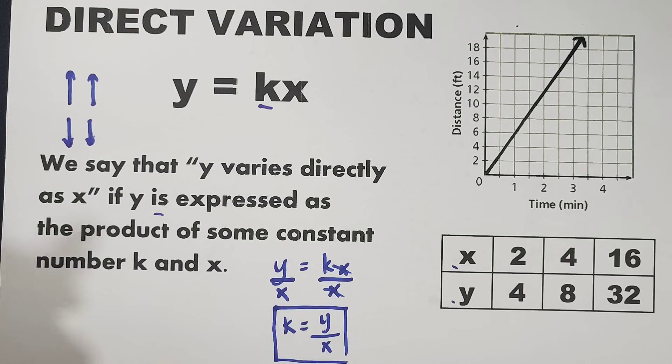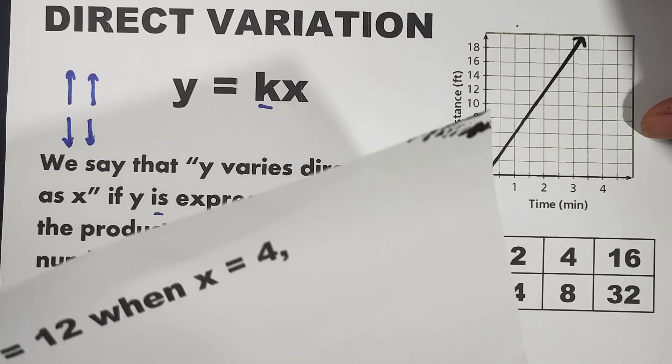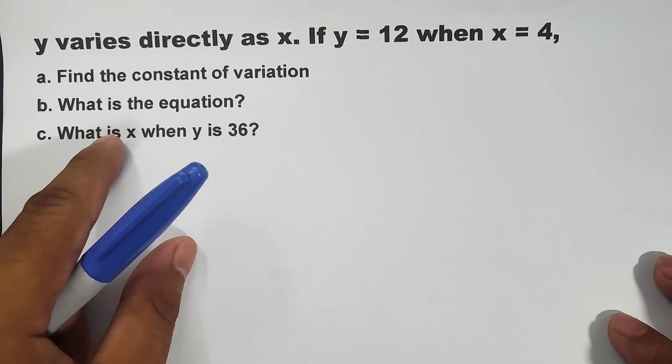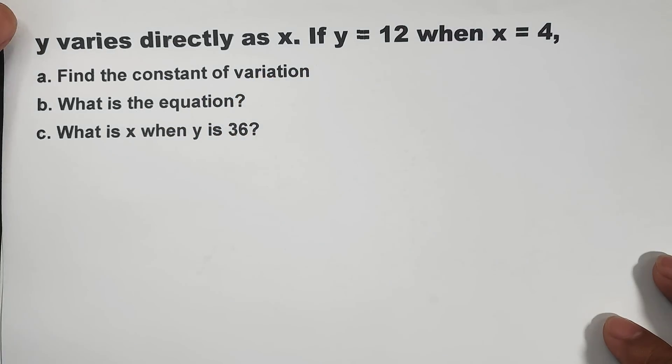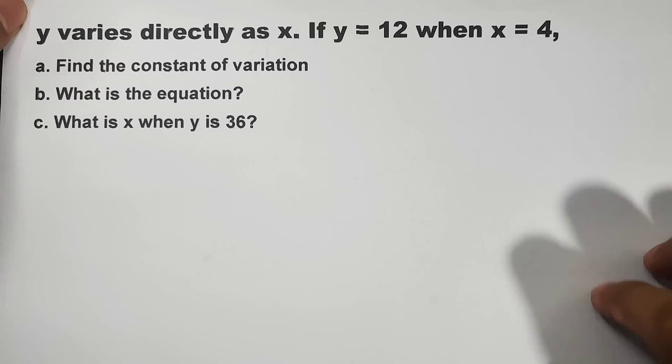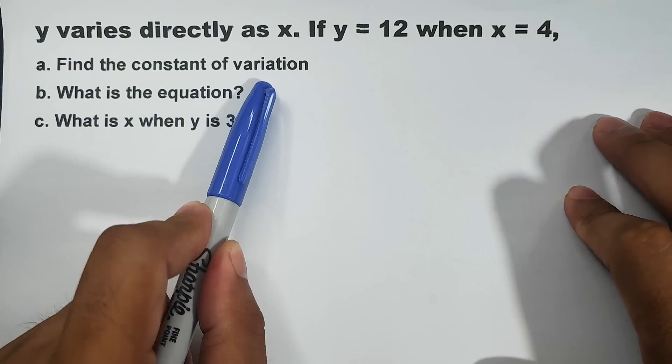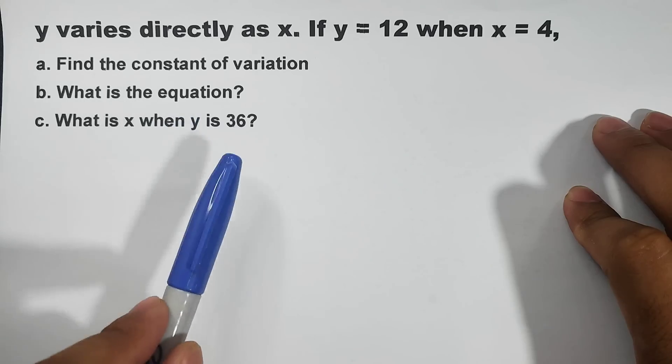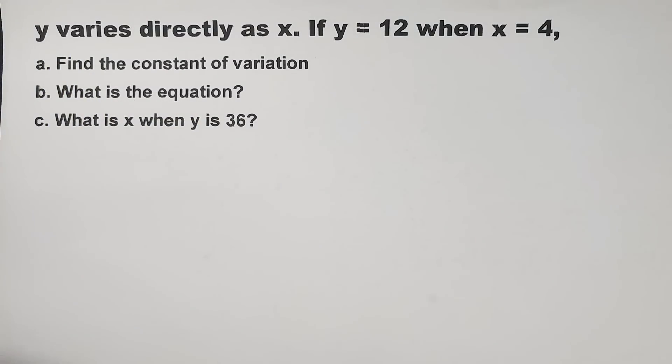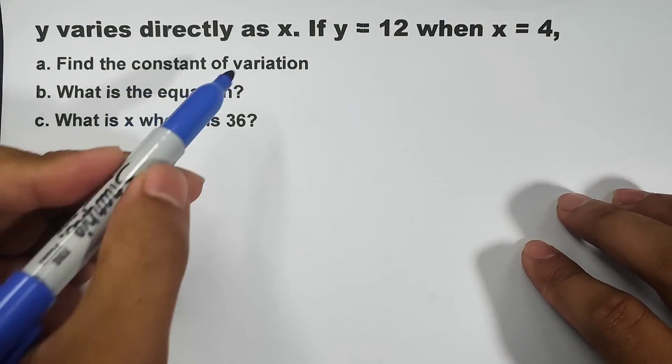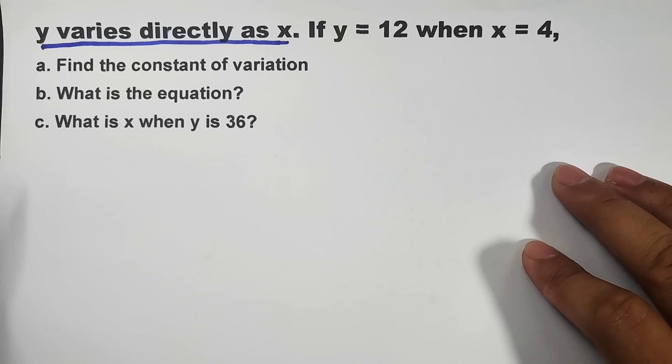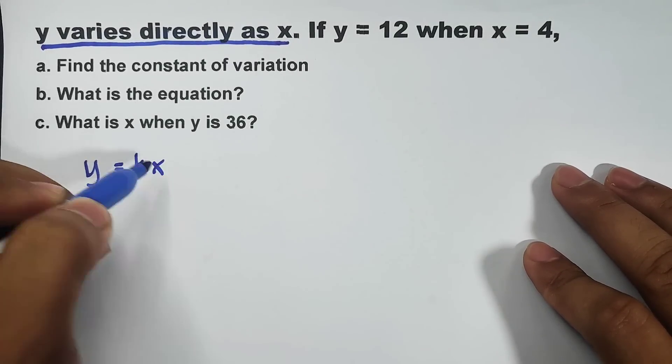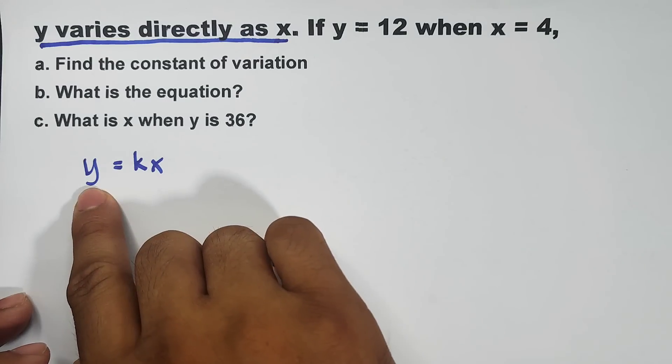So, let's have here a problem that would give you the idea of the possible questions for direct variation. We have here y varies directly as x if y equals 12 and x equals 4. Here's the problem. So, right now, first thing we need to do is to find the constant of variation. Knowing that this one is a direct variation, we need to translate this first. Y varies directly as x. When you encounter this kind of statement, that is simply equal to y equals kx. This is the general formula.